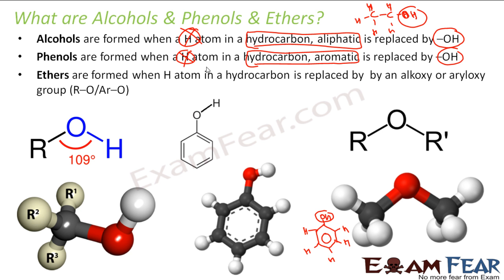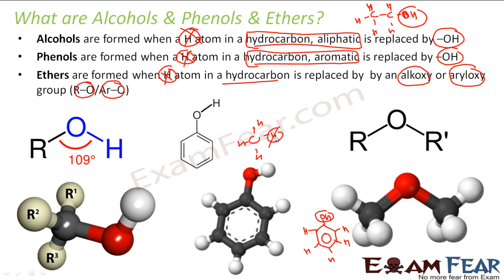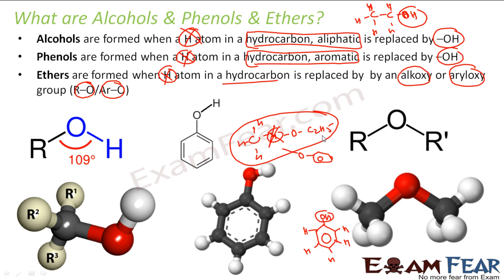Next are ethers. Here you can take any hydrocarbon — aliphatic or aromatic — and replace H with an alkoxy or aralkoxy group. For example, take methane and replace one hydrogen with OC₂H₅ — that gives you an ether. If instead you put O-phenyl, that is an aralkoxy group, while OC₂H₅ is an alkoxy group. Replace H with either alkoxy or aralkoxy and you get ethers.